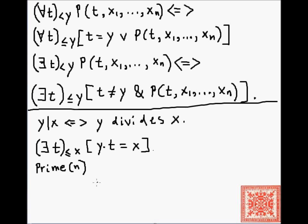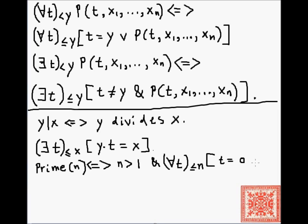Let's define 'n is prime.' n is prime means n > 1, and for all t ≤ n, either t = 0, or t = 1, or t = n, or t does not divide n. In other words, the only divisors of n are 1 and n itself.